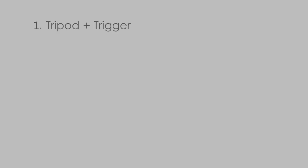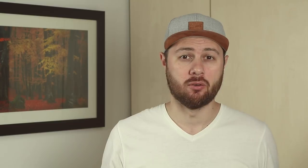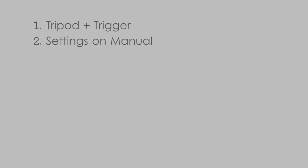In order to achieve this result, you first need a tripod and a remote trigger, because it's very important to have the camera in the exact same place for every photo. Then you need to keep your settings on full manual because you don't want to change settings between photos. Third, you need to pay attention to light because you don't want that to change either.